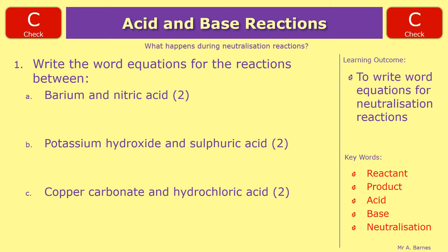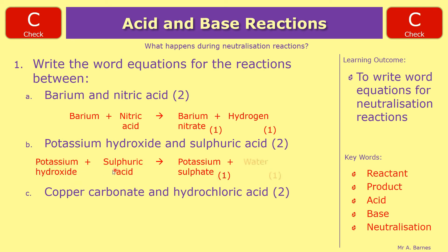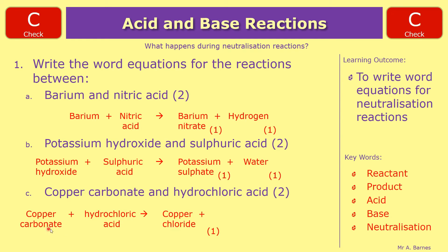Let's have a look at the answers. The first one: reactants are barium and nitric acid. Take the name of the metal, barium, and nitric acid means you have barium nitrate for one mark. Because it's a metal on its own, hydrogen is given off. Question two: potassium hydroxide and sulfuric acid. The metal is potassium, sulfuric acid gives us sulfate, so potassium sulfate for one mark. Because we have a hydroxide, water is our by-product. Finally, copper carbonate and hydrochloric acid: copper with a chloride ending gives copper chloride for one mark, and the carbonate gives two by-products — water and carbon dioxide — for the second mark.